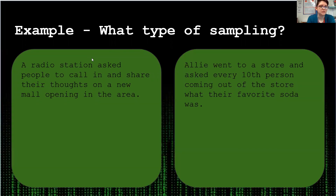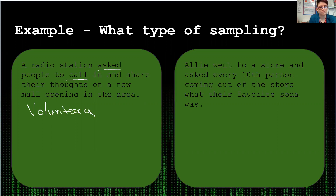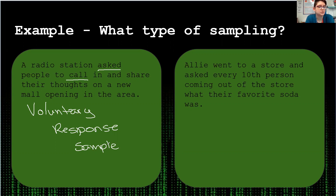A radio station asks you to call in and share your thoughts on a new mall opening in the area. You don't have to call in — you're asked to, but not required to. So this is a voluntary response sample. One thing with voluntary response is you'll probably only get people that feel very strongly — either they're excited and can't wait for the mall, or they hate the idea and want it to go away. Voluntary response tends to get your two extremes: the very excited people and the very against people.